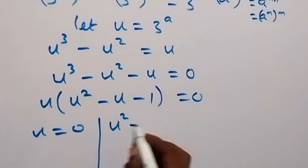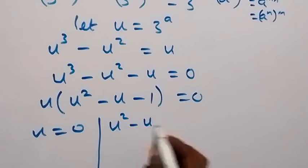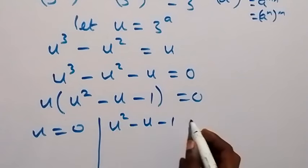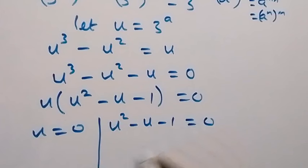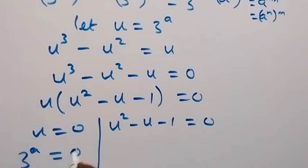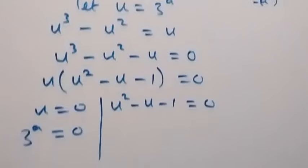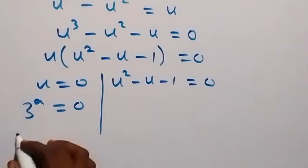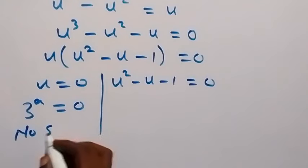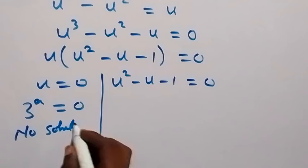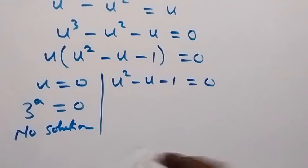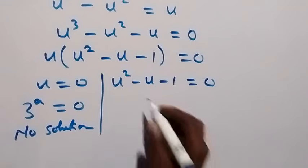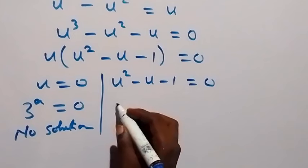So we have two cases: u equals zero, and u squared minus u minus 1 equals zero. For the first case, recalling that u equals 3 raised to power a, if 3 raised to power a equals zero, this is not possible. So there is no solution on this side.